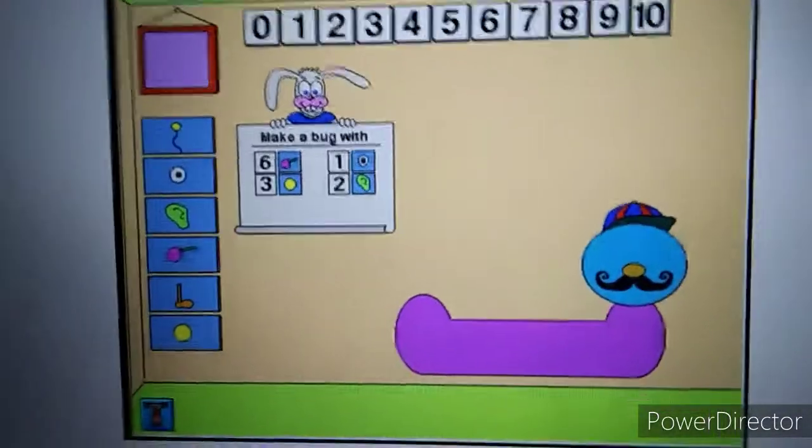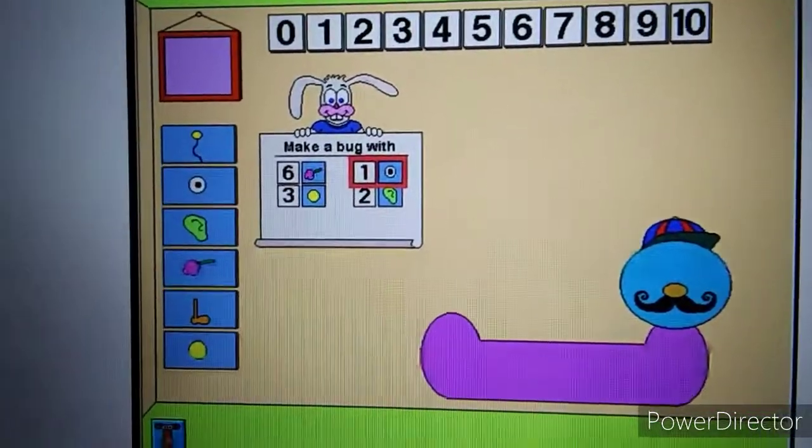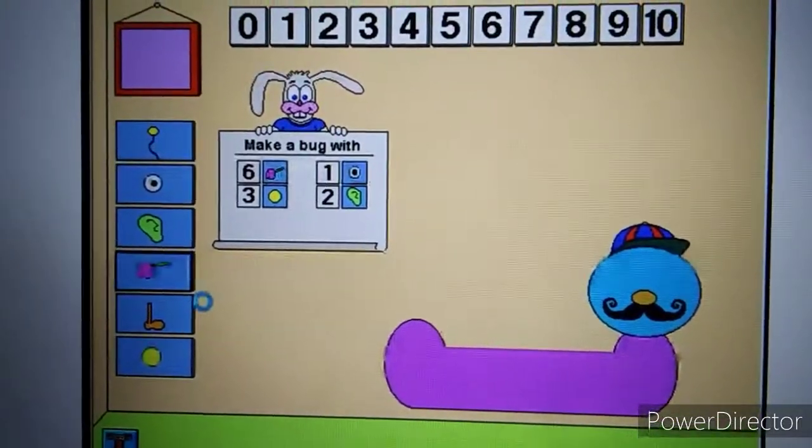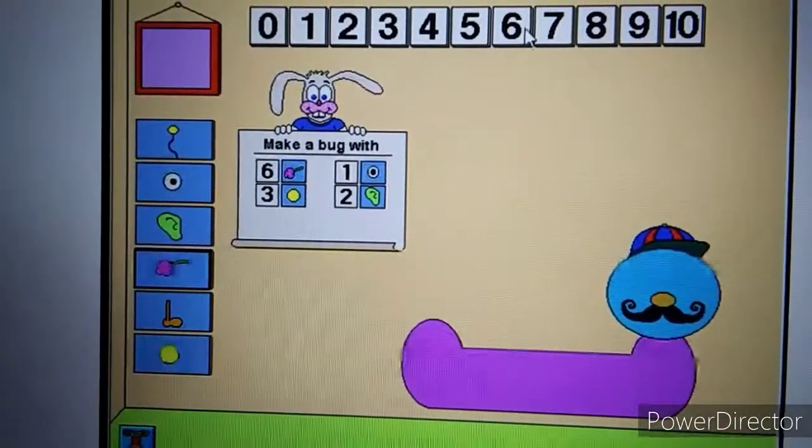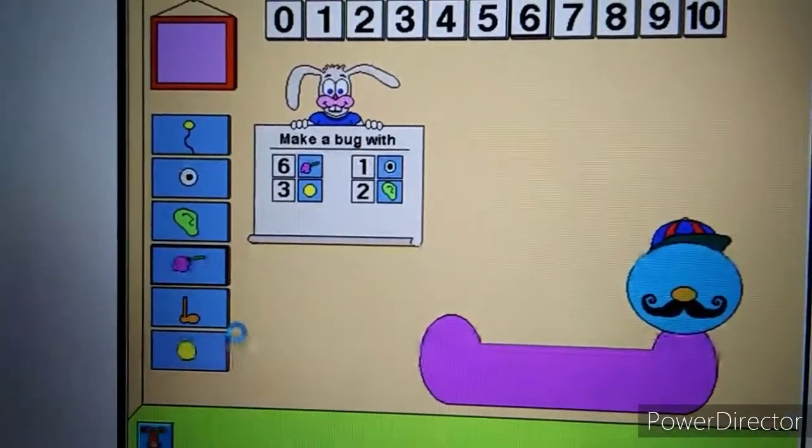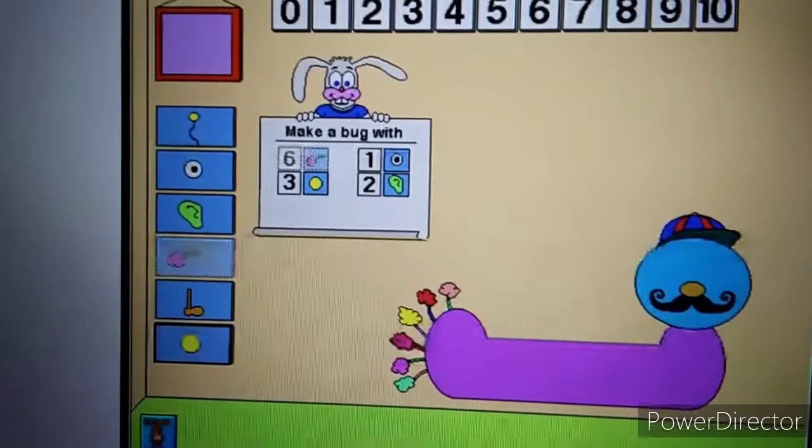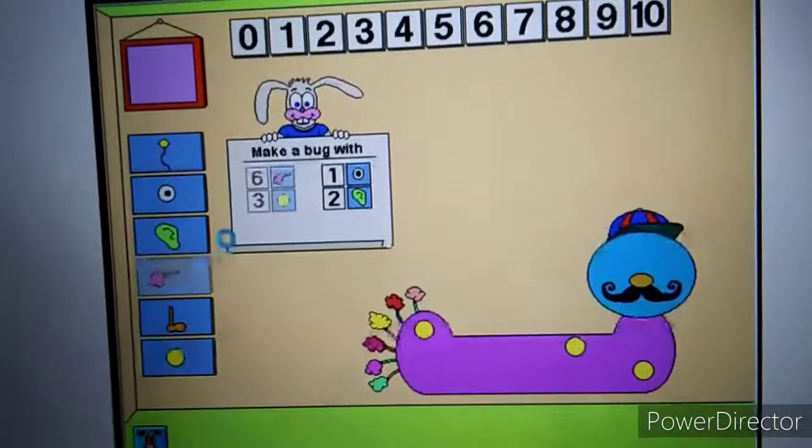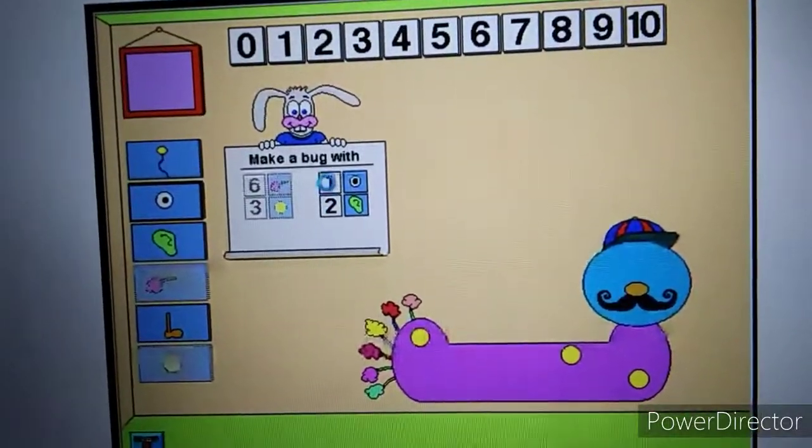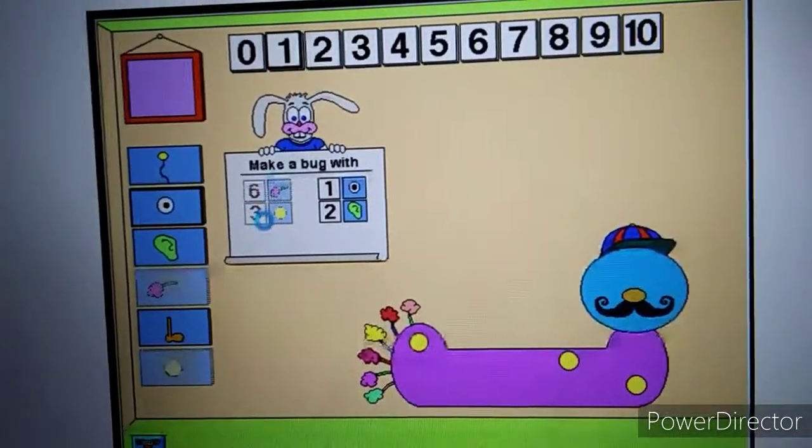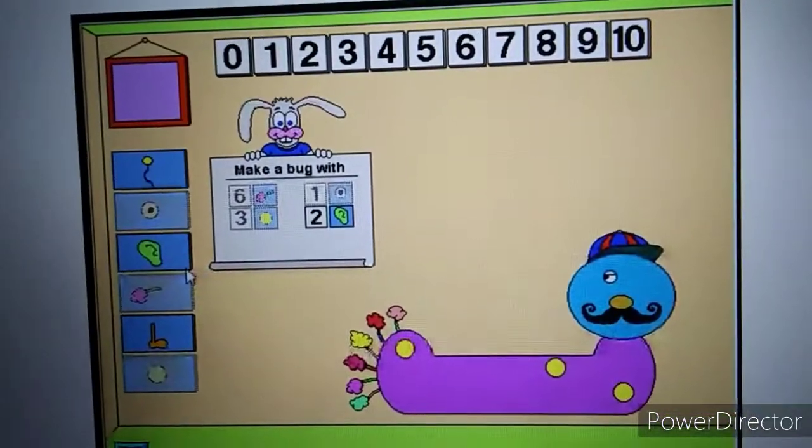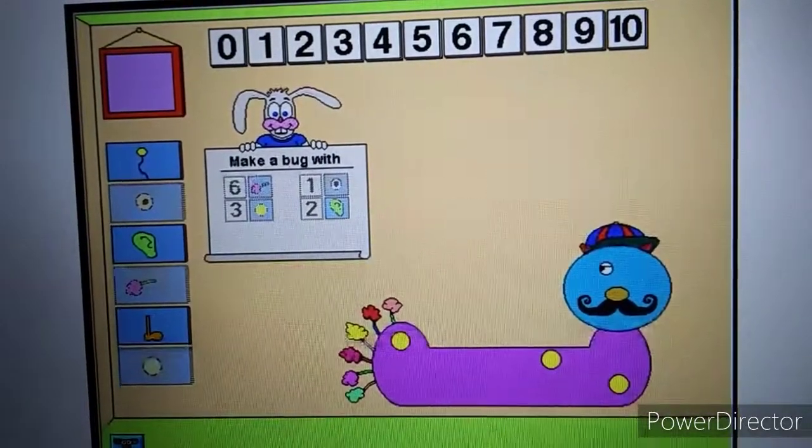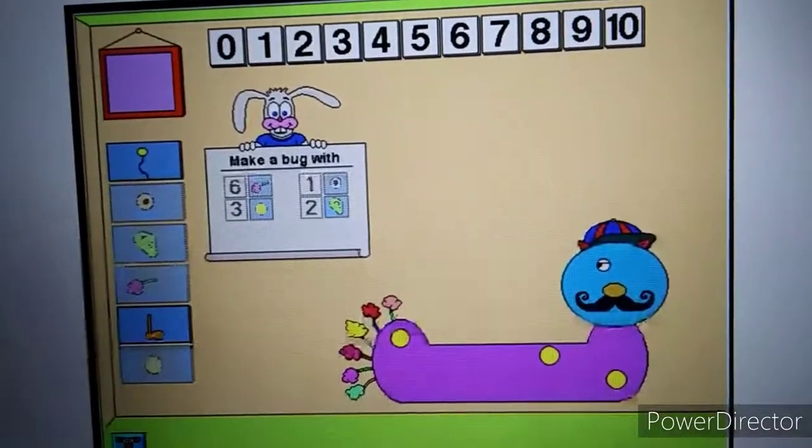Make a bug with six tails, one eye, three spots, and two ears. Tails. Six tails. Spots. Three spots. Eyes. One eye. Ears. Two ears. Good job.